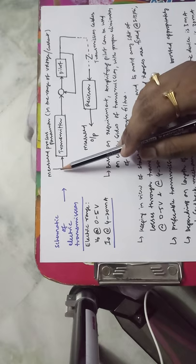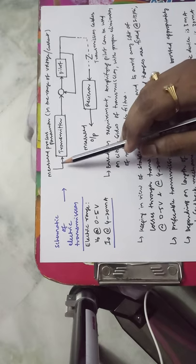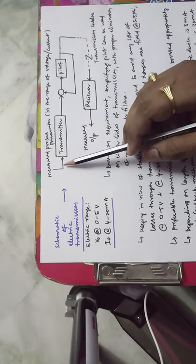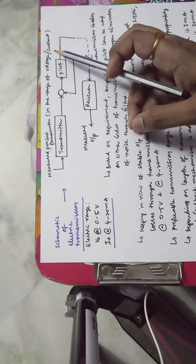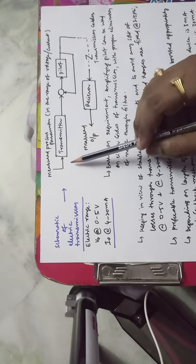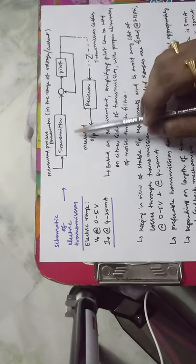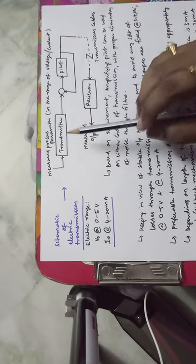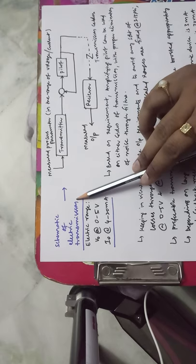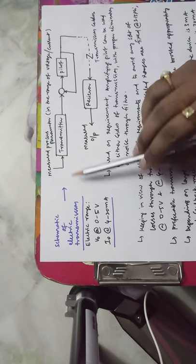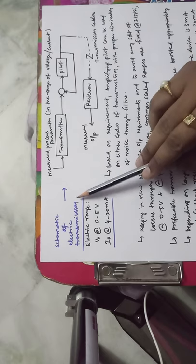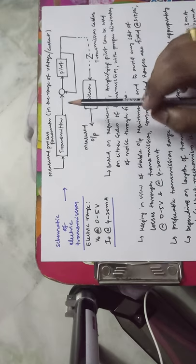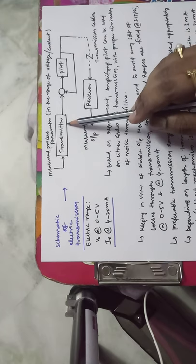In pneumatic transducers, the measured process variable is converted to a pressure parameter. In electrical transmission, the measured process parameter is converted to an electrical variable — either voltage or current. If it is voltage, it is called a voltage telemetry system; if it is current, it is called a current telemetry system. Electrical transmission systems are preferred to avoid problems associated with pneumatic transmission.